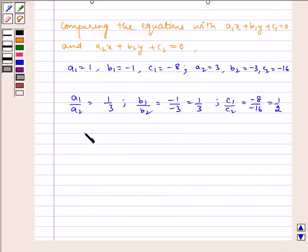Therefore, we can see that a1 by a2 equals b1 by b2, which is not equal to c1 by c2. Therefore, the given pair of linear equations are inconsistent.